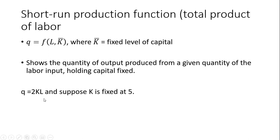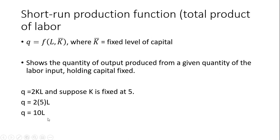Here's an example of a production function, and we're going to turn it into a short run production function. The quantity of output equals 2 times units of capital times units of labor. In the short run, capital is fixed — you can't vary it; it takes time to build a new plant. So we're going to plug 5 in for K, and simplifying, here is our short run production function.